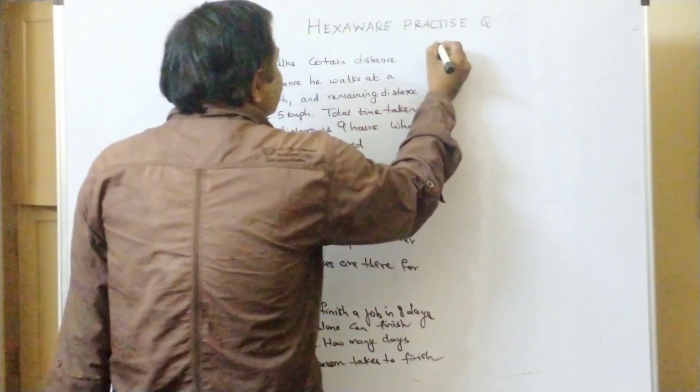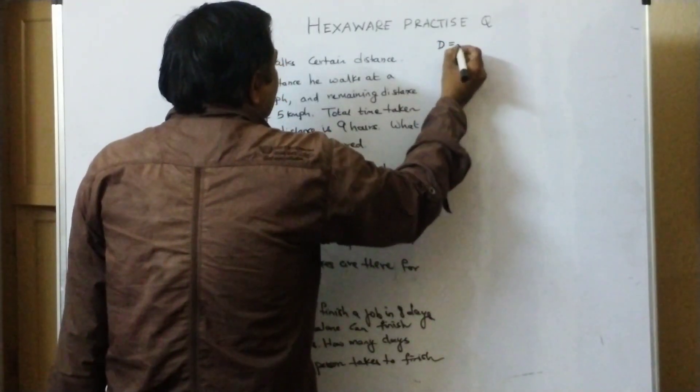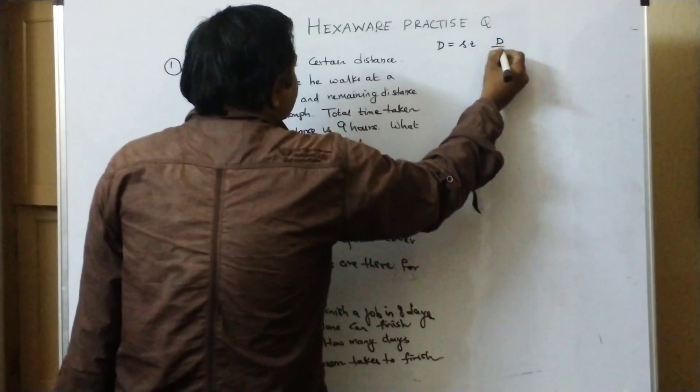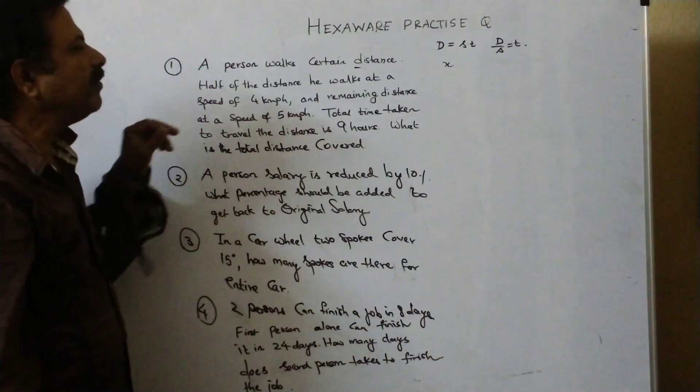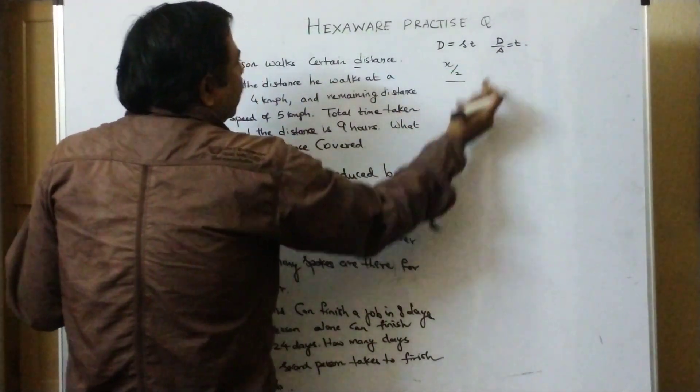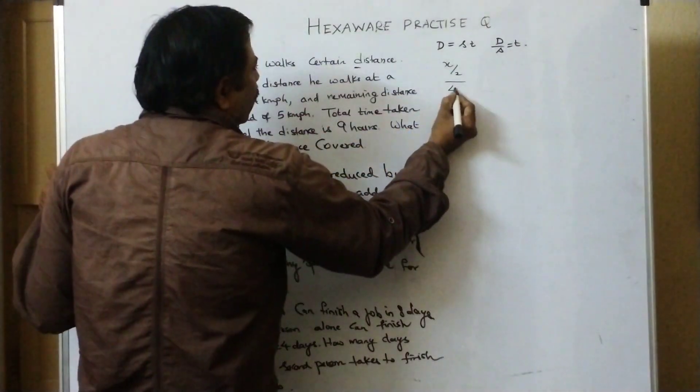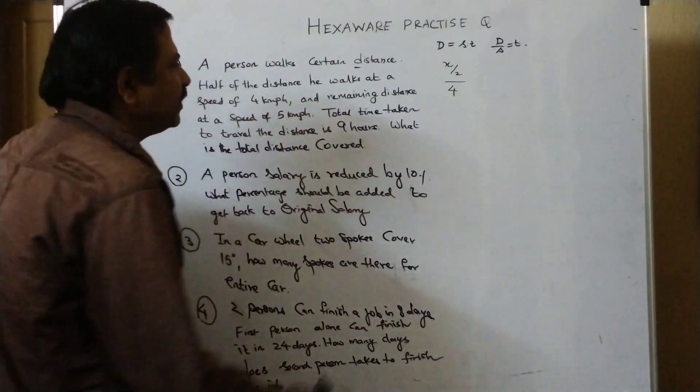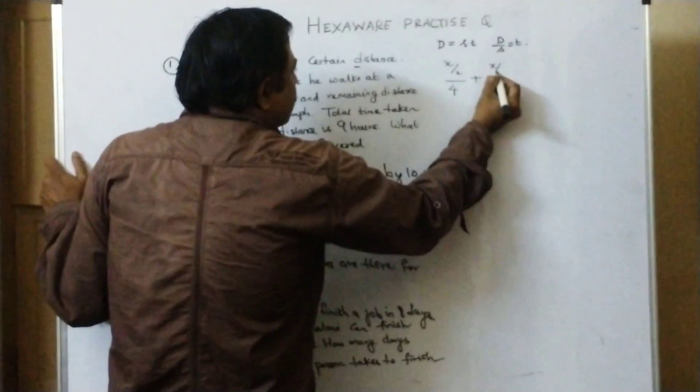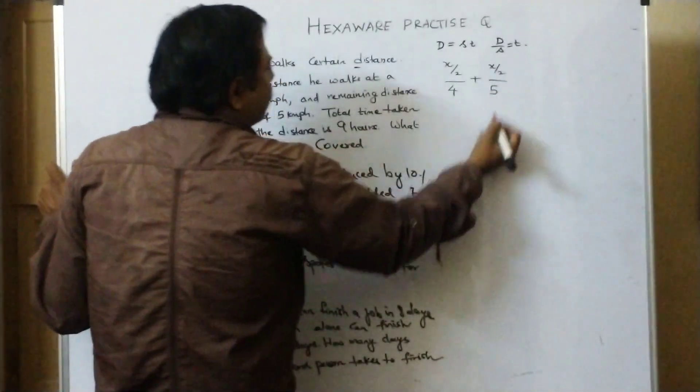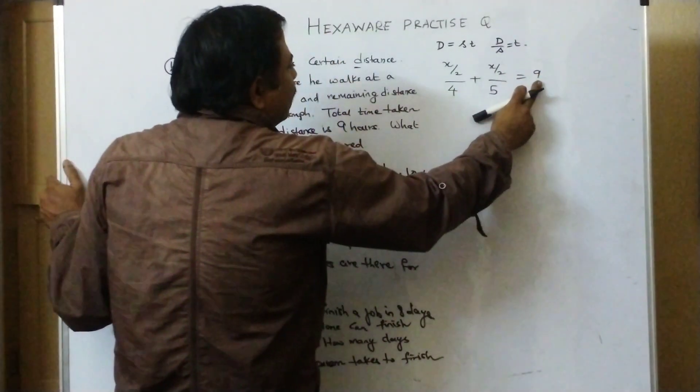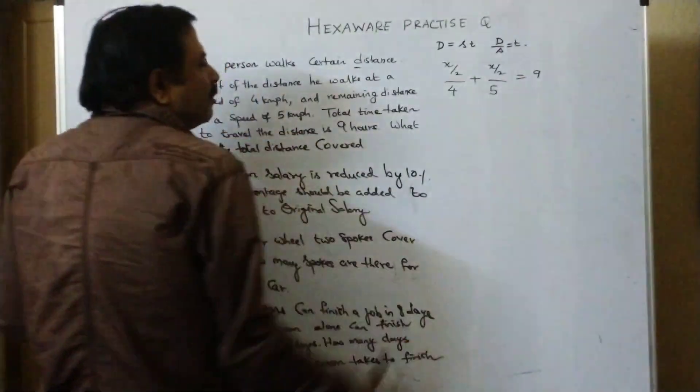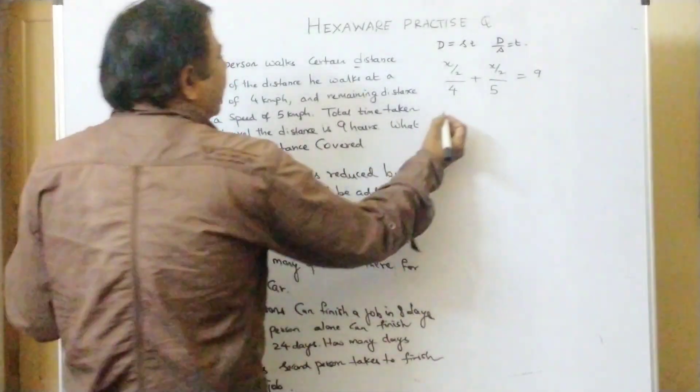I repeat the question. Distance equals speed into time. Distance by speed equals time. This is one formula. A person walks a certain distance, let the distance be x. Half of the distance, x by 2. Distance by speed. His speed is 4 km per hour. And the remaining distance, that means remaining half, his speed is 5 km per hour. The total time taken to travel the distance is 9 hours.